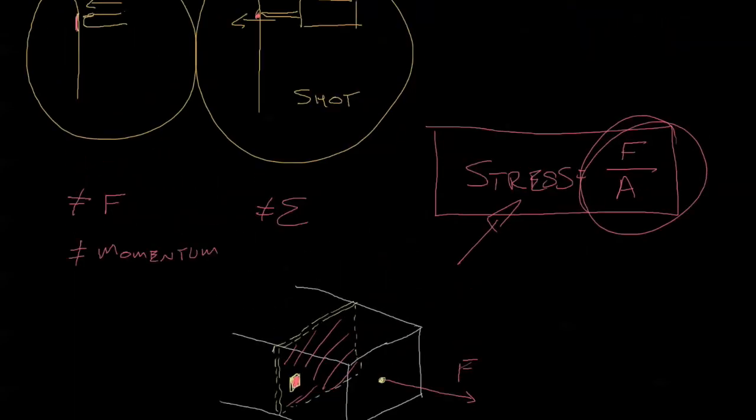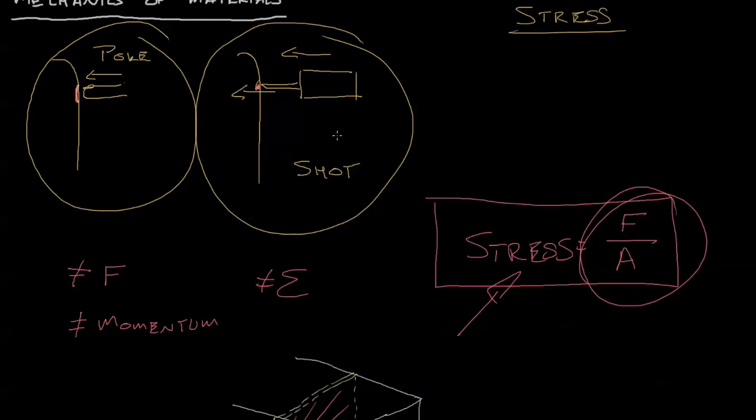So in our original question up here - poke and a shot - the difference is this area. We make that area really small. Take a look at what happens to the stress. We're making the denominator really big. So the stress goes way up. And in fact, this is what your skin feels - it feels stress, not force. So that's why if somebody pokes you, it's no big deal. You have that force distributed over a large area, so you have a small stress. And why a shot is not so happy - because it's distributed over a small area, so you have a high stress.